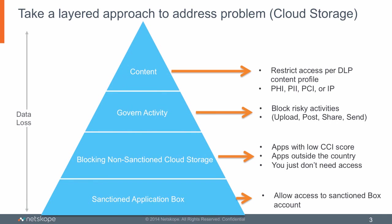Now we know how Netscope can see applications from an inline perspective — things like the variable, the instance ID, and the activity performed inside the application. Let's apply that knowledge to securing applications, whether sanctioned or non-sanctioned. Here's a model that will help most companies secure their environment. In this case, we'll be talking about cloud storage, and the sanctioned application in this example is going to be Box. The same example can apply to any type of application or application category.